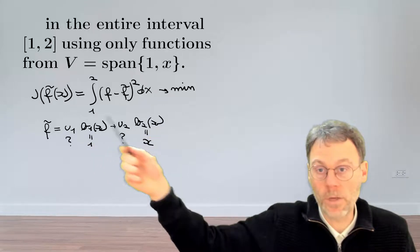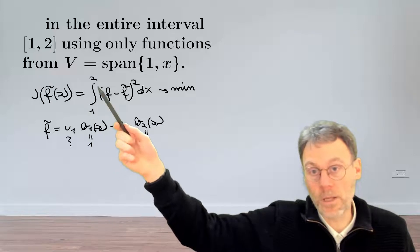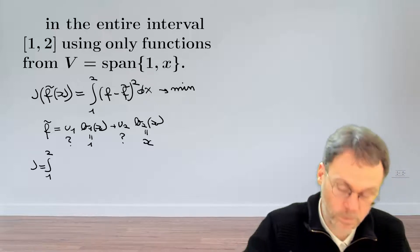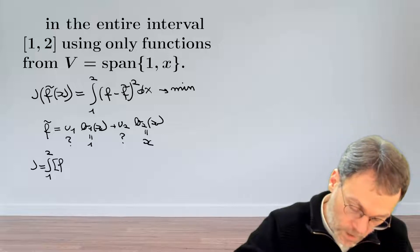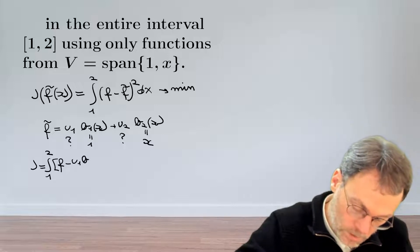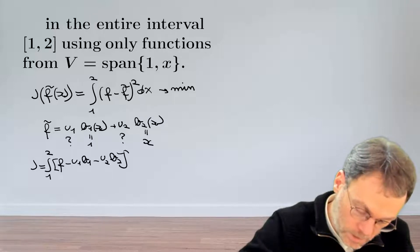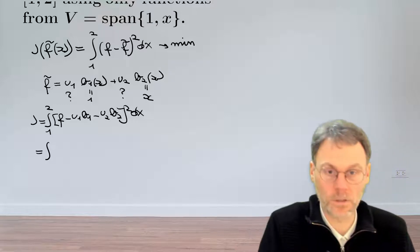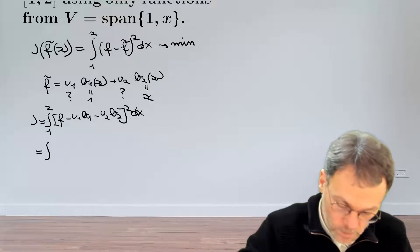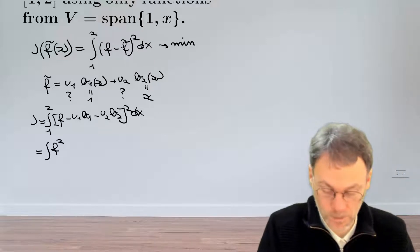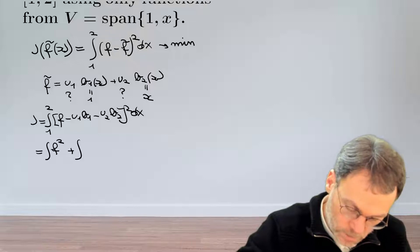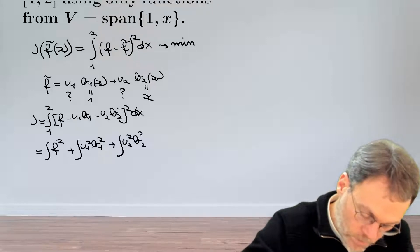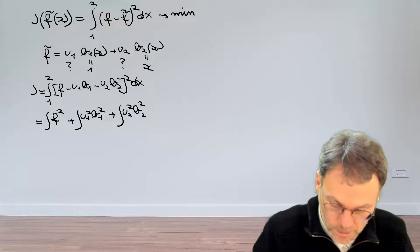Now that we know how we're going to approximate f using f-tilde, we can substitute that back into our expression for J. So J is actually going to be the integral from 1 to 2 of the squared difference of f minus u1·b1(x) minus u2·b2(x), all squared, dx. Expanding this, we get the integral of f squared, plus u1 squared·b1 squared, plus u2 squared·b2 squared, and so on.